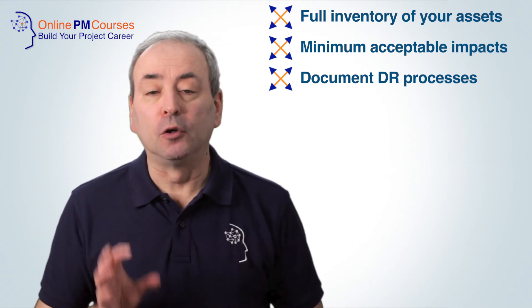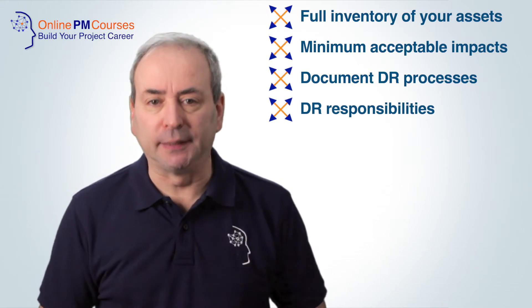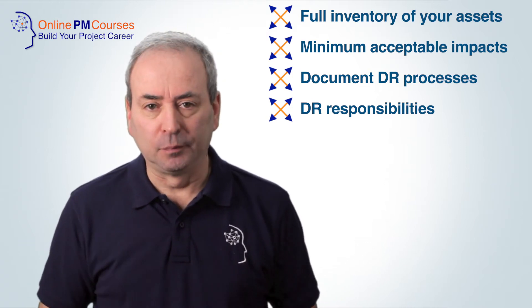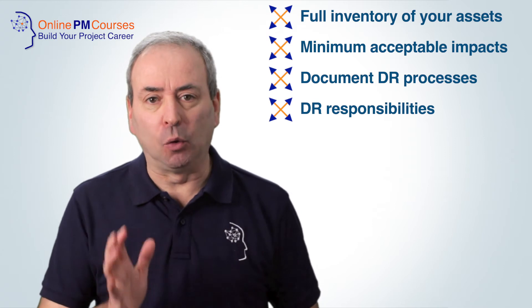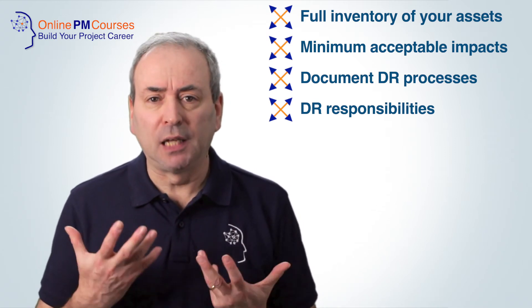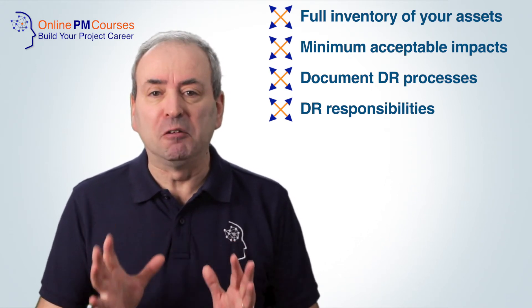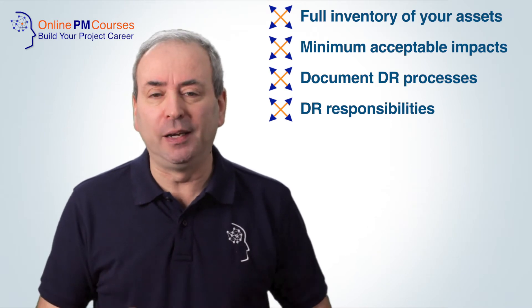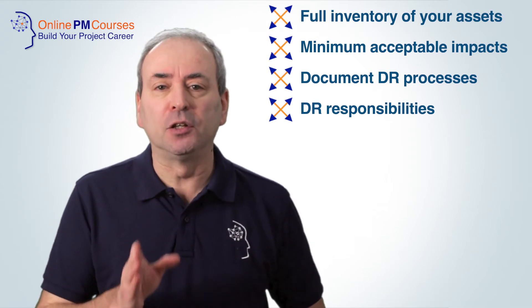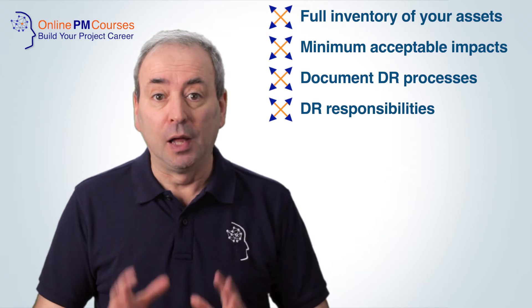Fourth, your plan needs to set out your disaster recovery responsibilities — both operational and authorisational. Who's going to do the work and who's going to authorize the changes? Critically, under this uncertain, disruptive scenario, some of the key role holders that you may rely upon may not be available. So what are your fallbacks — who is going to step into the shoes of each of your operational and authorisational key roles?